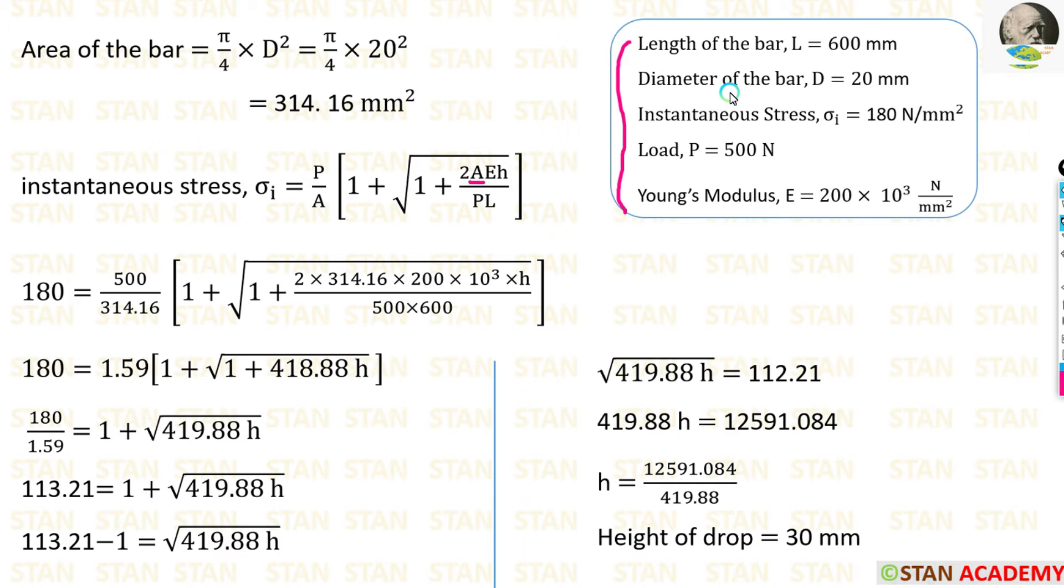It is a circular section. The diameter of the bar is given 20 mm. We know the formula for area, pi by 4 into D square. We can apply the value of D, 20. Finally, we are getting the area 314.16 mm square.